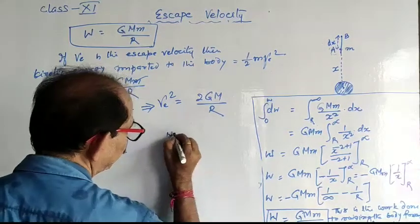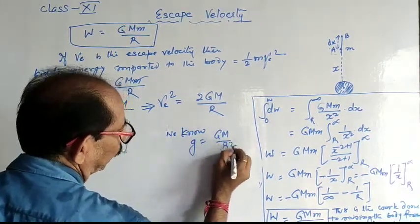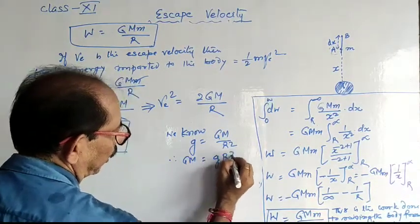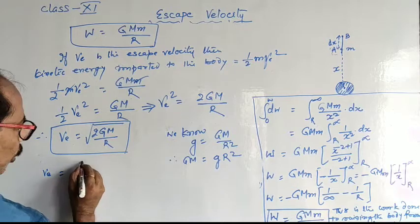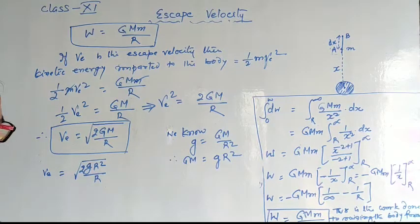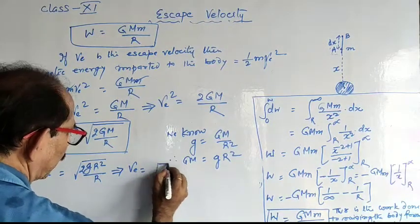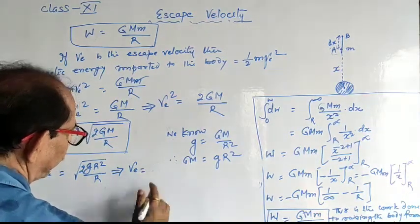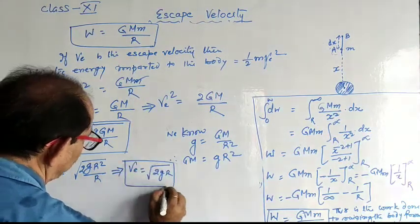We know that small g equals GM divided by R squared, so GM equals g R squared. Substituting into equation one: Ve equals the square root of 2g R squared divided by R. One R cancels, giving Ve equals the square root of 2gR. This is the second equation.